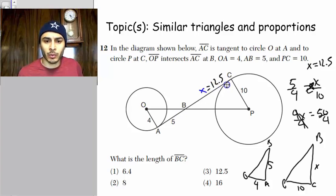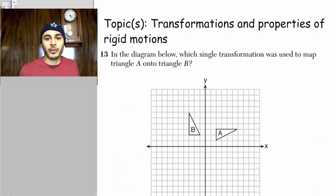So X is 12.5, and they want BC. All right, so it's 12.5.